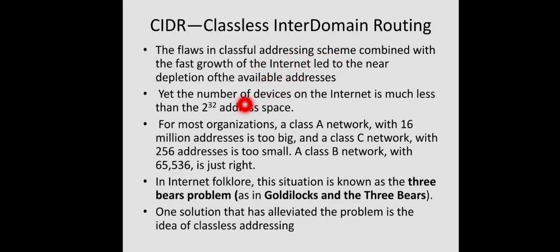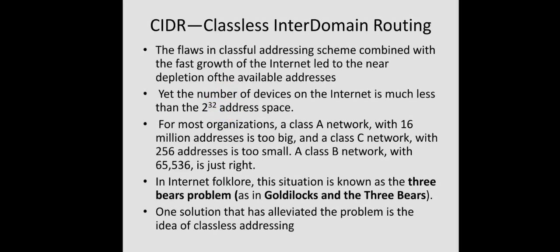Even though the total number of devices on the internet is much less than 2^32 — since 32 bits are used for address space — the total number of devices is far less than that address space, yet the internet started running out of addresses. In internet folklore, this situation is actually called the 3-B's problem.